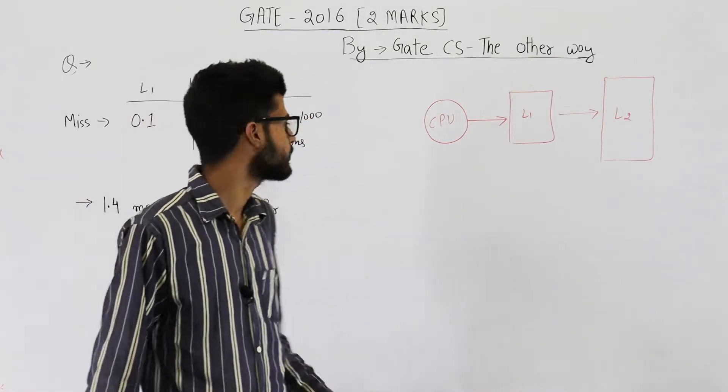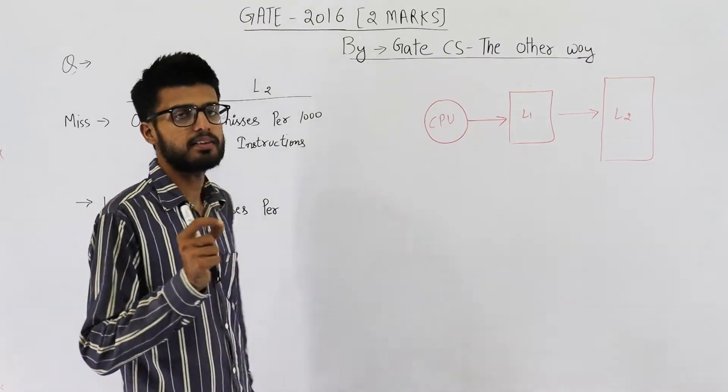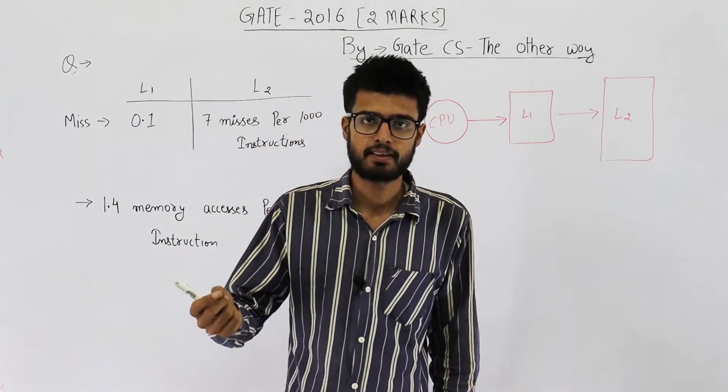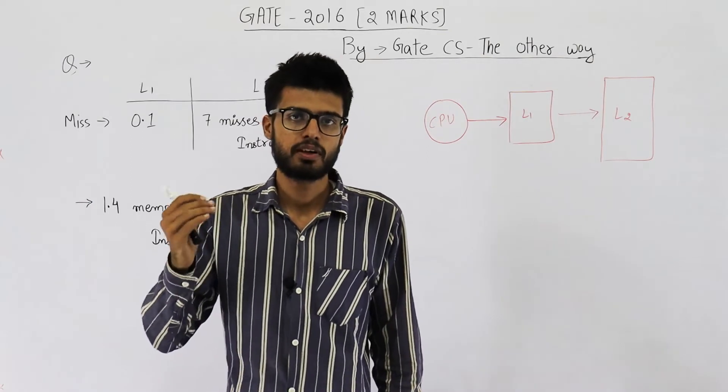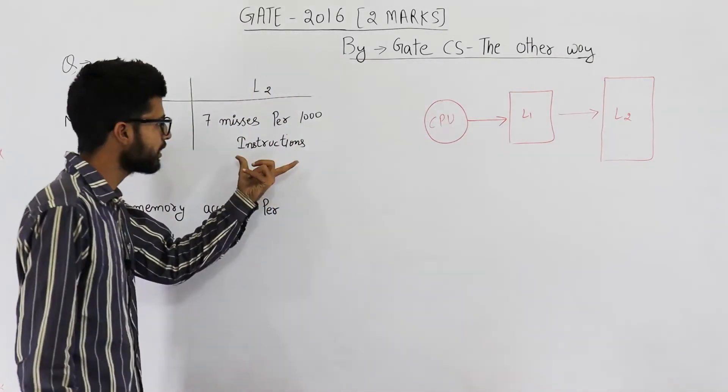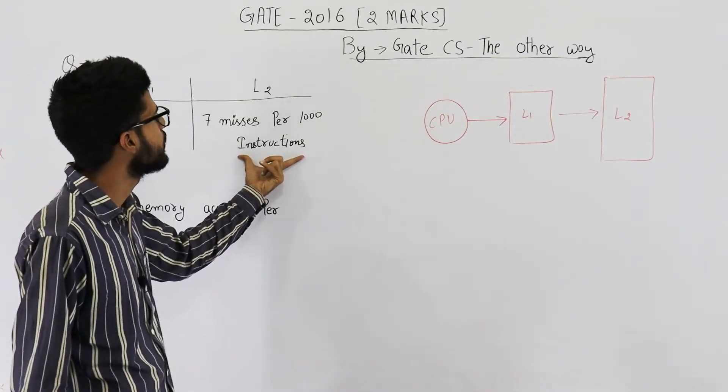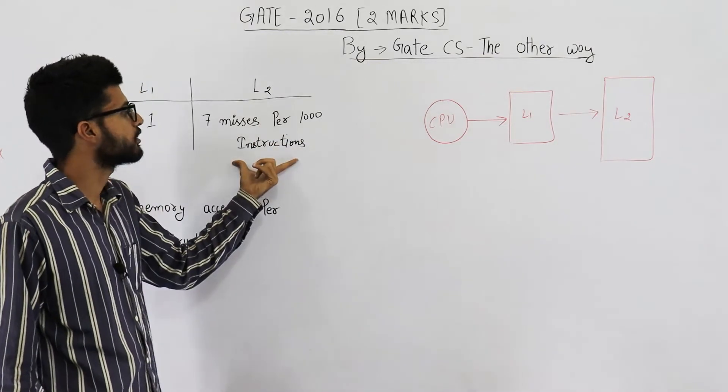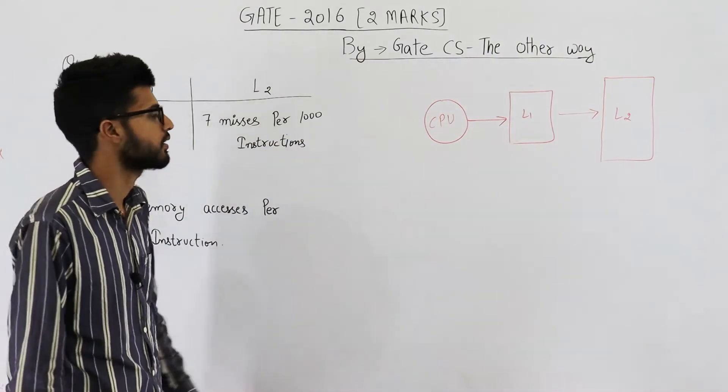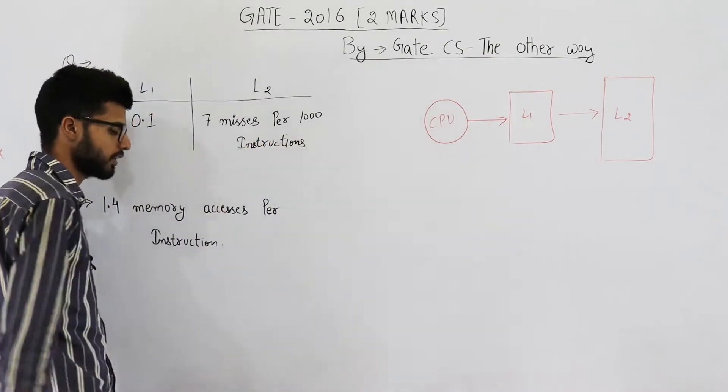You cannot simply say it is 7 divided by 1000 because miss rate is for number of accesses. That means out of 100 accesses how many times there is a miss. But they are not talking about accesses here. The information given is per thousand instructions - instructions not accesses. So we need to convert these instructions into accesses.